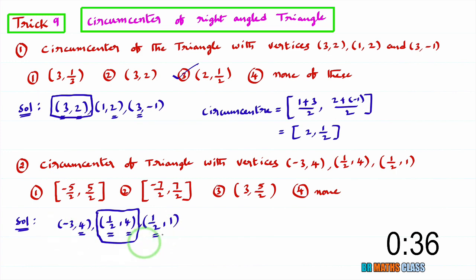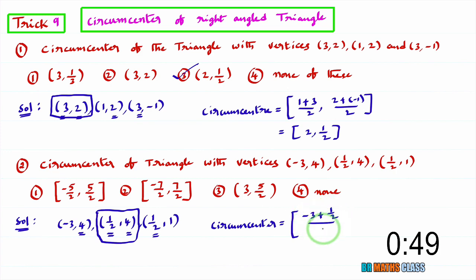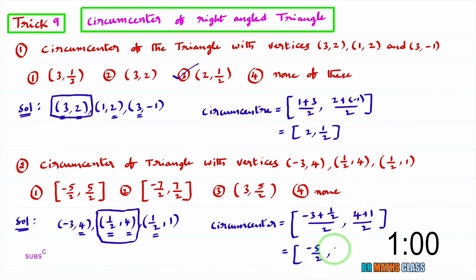The remaining two points are the endpoints of the hypotenuse. In a right-angled triangle, the circumcenter is the midpoint of the hypotenuse. Using the midpoint formula: (x1 + x2)/2, (y1 + y2)/2 = (−6 + 1)/2, (4 + 1)/2 = −5/2, 5/2. The answer is (−5/2, 5/2), so the first option is correct.